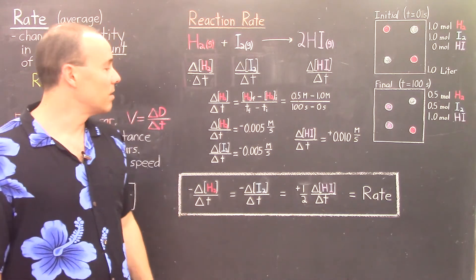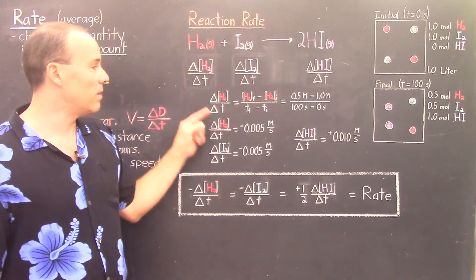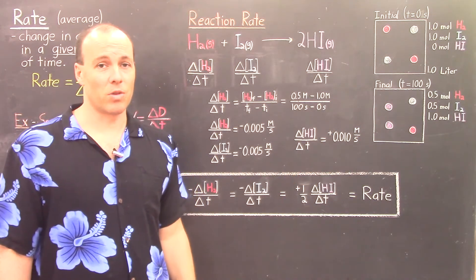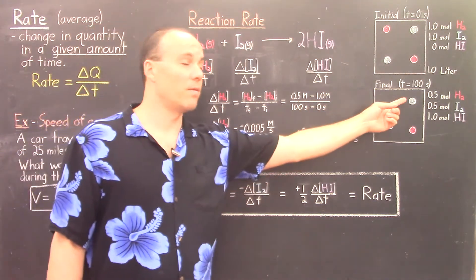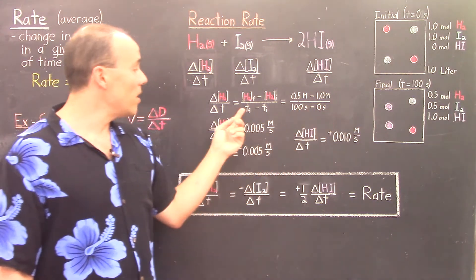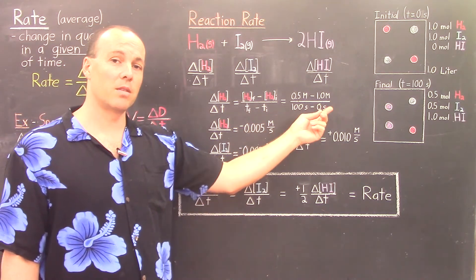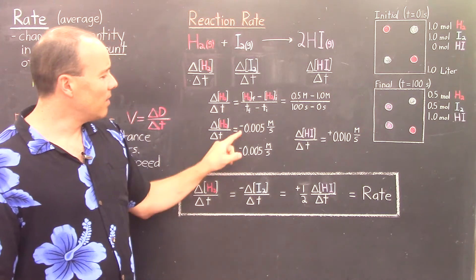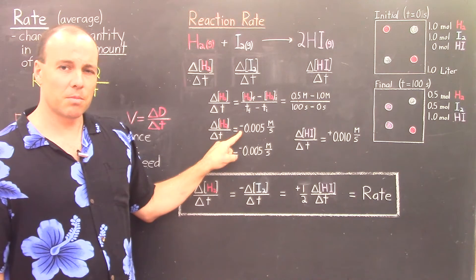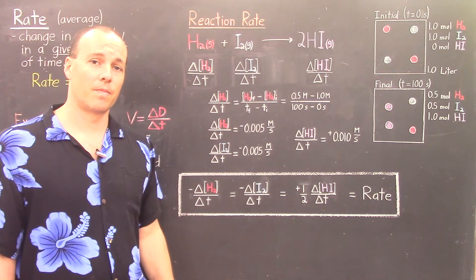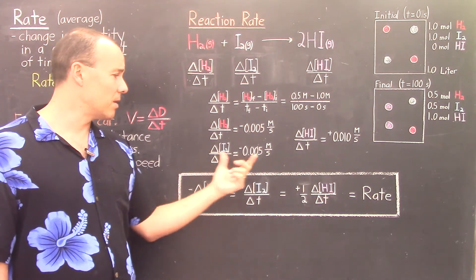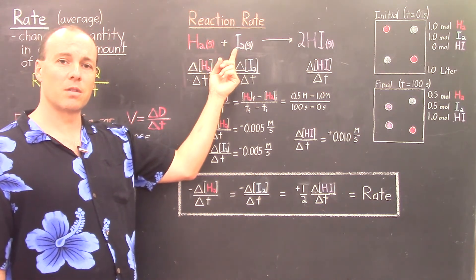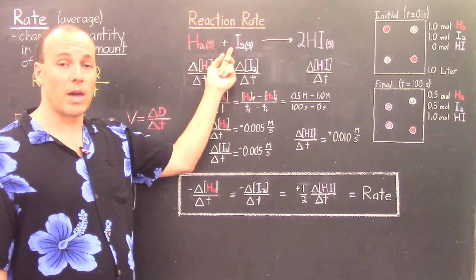Calculating these three rates, for hydrogen the change in concentration would be the final minus the initial concentration. Because this occurs in a one liter vessel, moles equals concentration. So the final concentration is 0.5 and the initial is 1, over 100 seconds minus zero, giving negative 0.005 molarity per second. It's negative because the hydrogen is disappearing at a rate of 0.005 M/s. The iodine rate is the same — negative 0.005 M/s — as expected because they have the same coefficients.